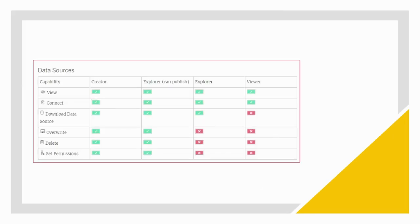Viewer can also download summary data, but will not be able to download the full data, and can run Explain Data. Next are Data Sources. Creator and Explorer Can Publish have all permissions, whereas Explorer just has view, connect, and download data source access. Viewer is further restricted to just view and connect to the data source.